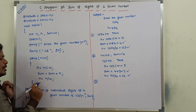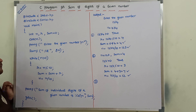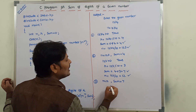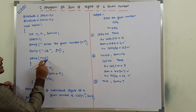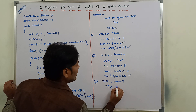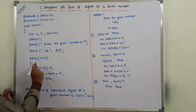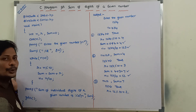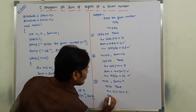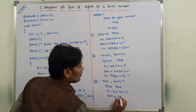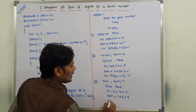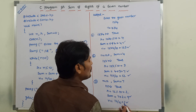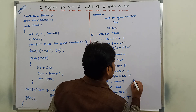The third iteration starts. n value is 12 and sum value is 7. Again, checking n greater than 0: 12 greater than 0 — condition true. r is equal to 12 modulus 10 — we are getting the remainder value 2. Sum is equal to 7 plus 2 equals 9. n is equal to 12 divided by 10 — that is equal to 1. These two values are used for the next, fourth iteration.